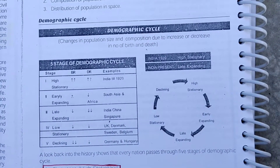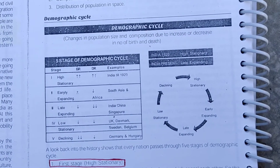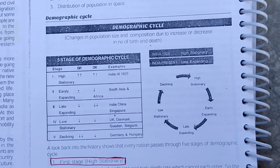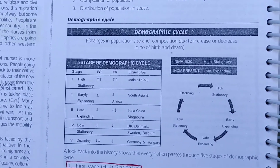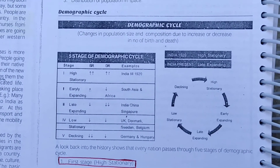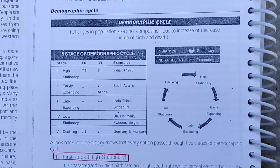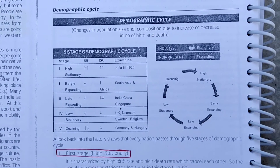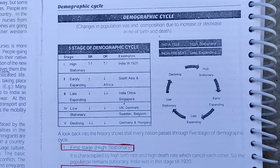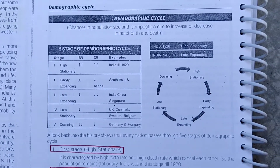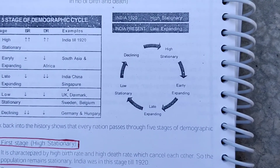Population changes when the number of births increases, causing the population to increase, or when the death rate increases, causing the population to decline. When the birth rate falls or the death rate rises, the population decreases. We study these changes in terms of the demographic cycle.